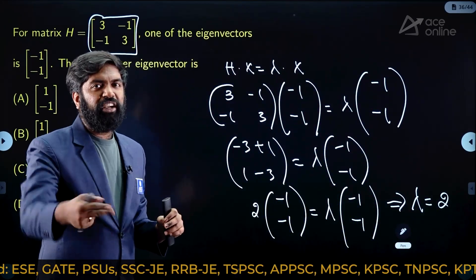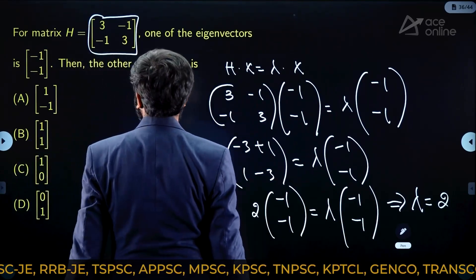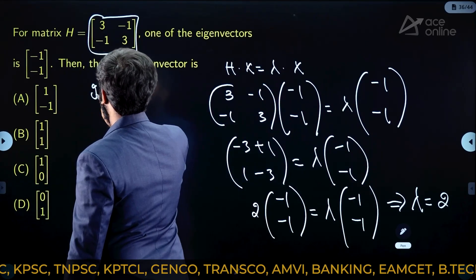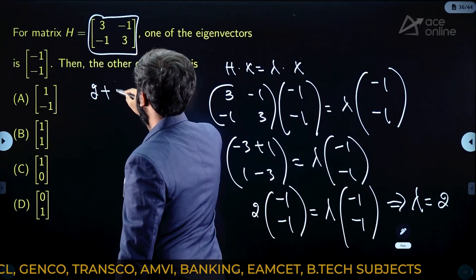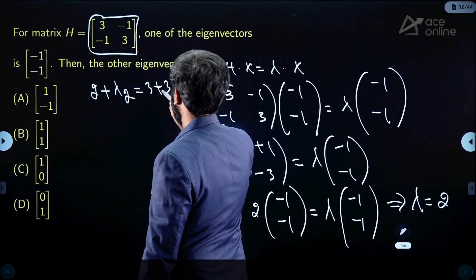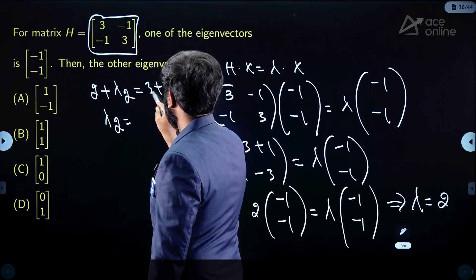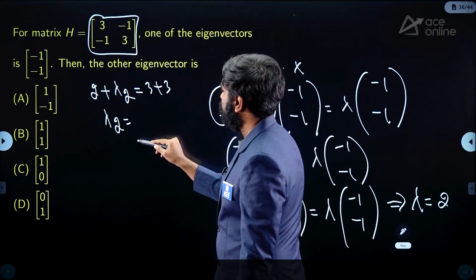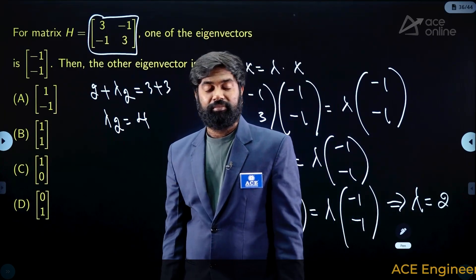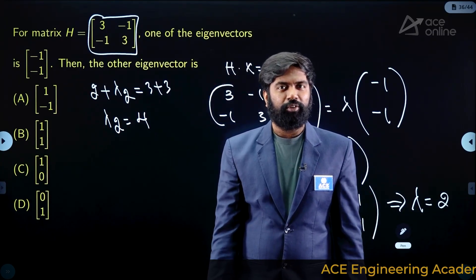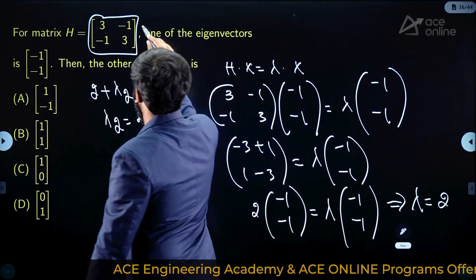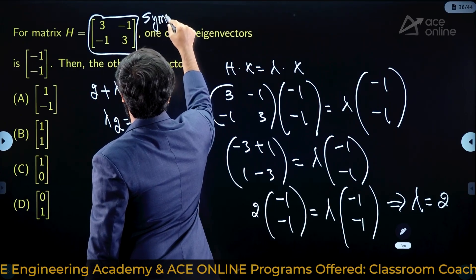Now find the other eigenvalue: 2 + λ₂ = trace = 3 + 3 = 6, so λ₂ = 4. The two eigenvalues 2 and 4 are distinct. For a symmetric matrix, eigenvectors corresponding to distinct eigenvalues are perpendicular, so the dot product of the two eigenvectors must be zero.